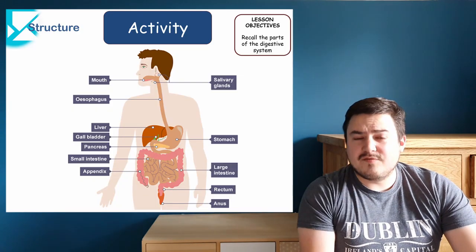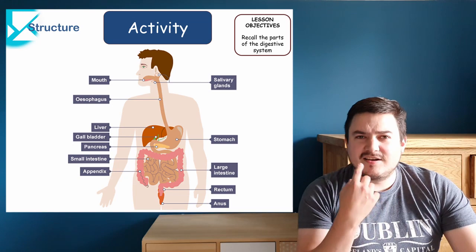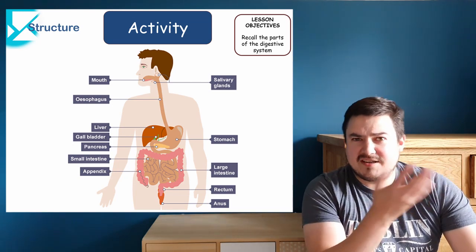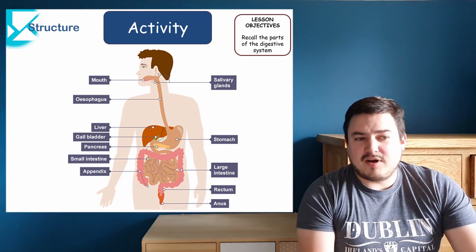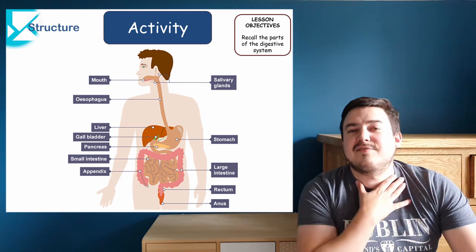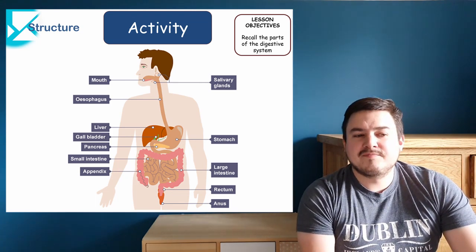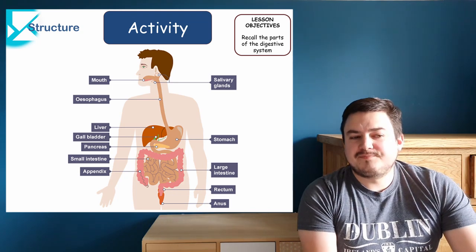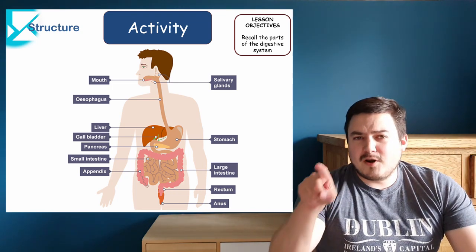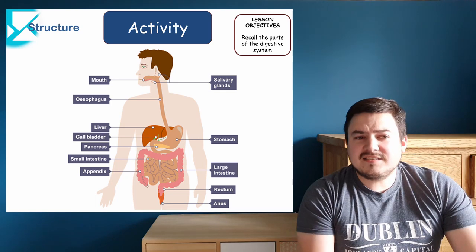So we're going to start at the top left of the image, which points to the mouth. The top right is pointing to the salivary glands at the back of the mouth. As we move down, the next label is the esophagus, followed by the large intestine, the rectum, and the anus.